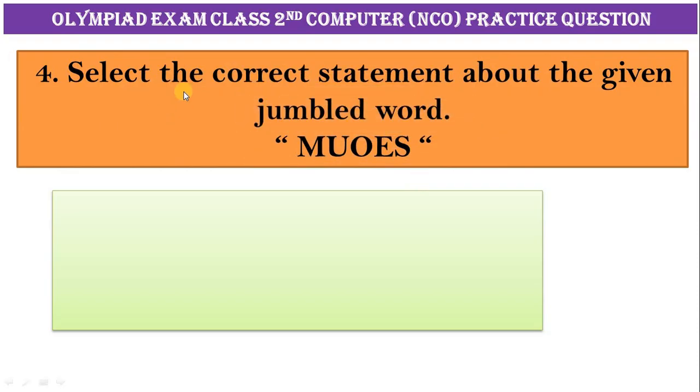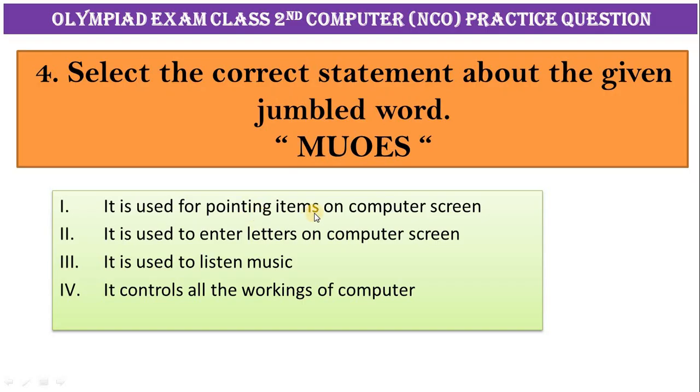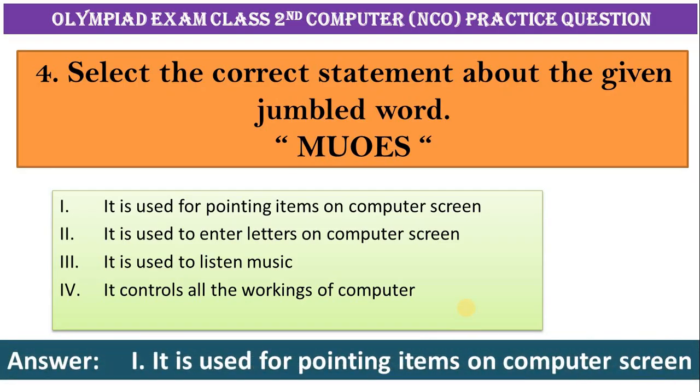Question number four: select the correct statement about the given jumbled word M-U-O-E-S. It is used for pointing items on computer screen. Second, it is used to enter letters on computer screen. Third, it is used to listen to music. And fourth, it controls all the working of computers. Correct answer is option one, it is used for pointing items on computer screen. This is pointing device, mouse.